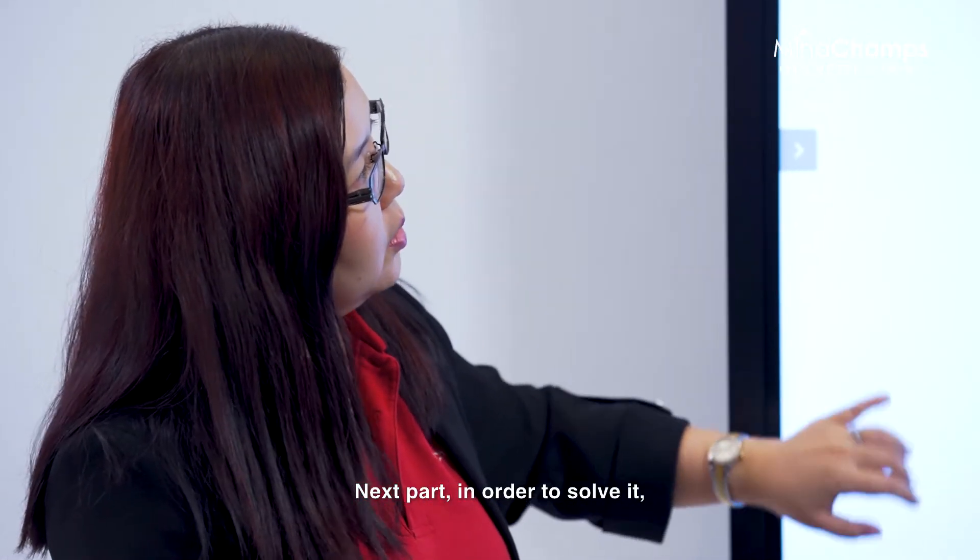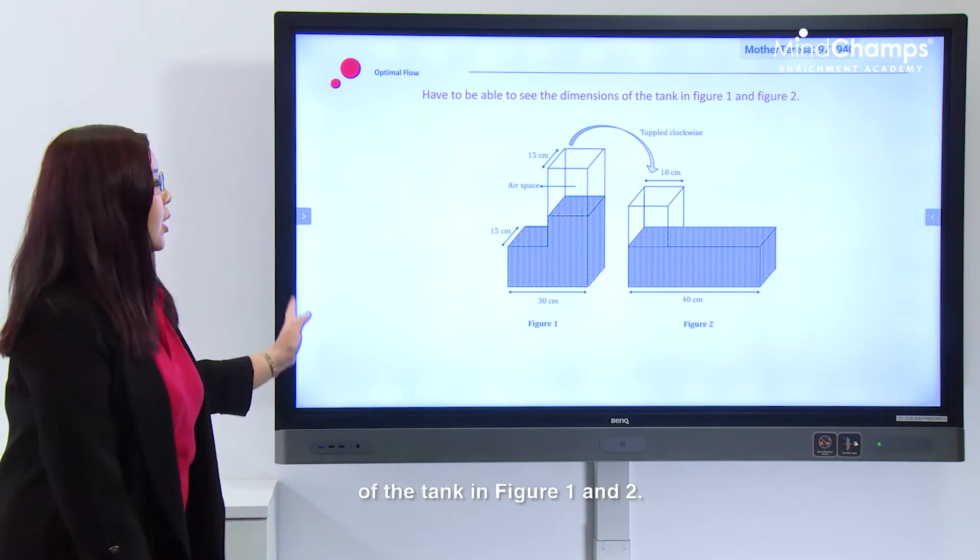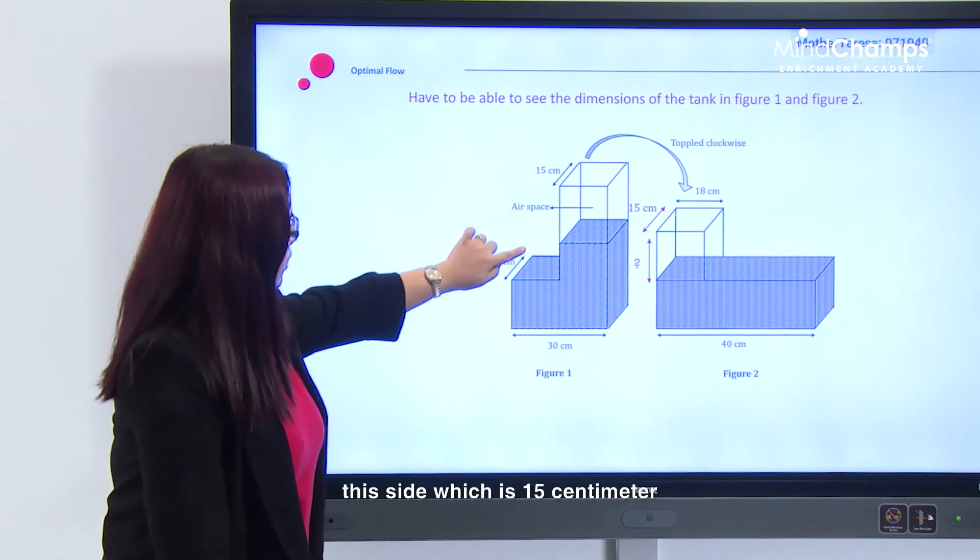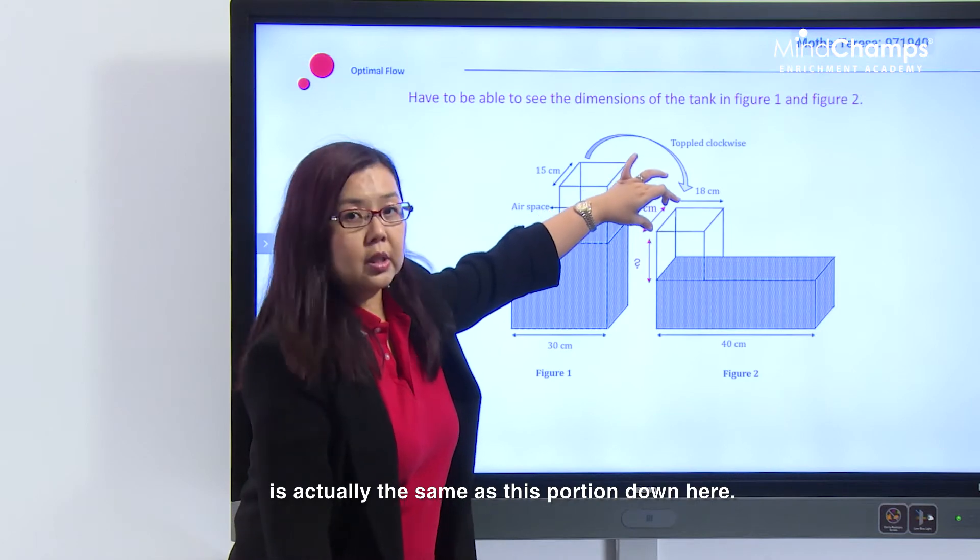The next part: in order to solve it, they have to be able to see the dimensions of the tank in Figures 1 and 2. When it's being toppled clockwise, they have to realize that this side, which is 15 centimeters, is actually the same as this portion down here.